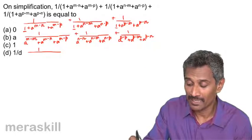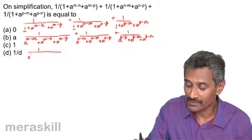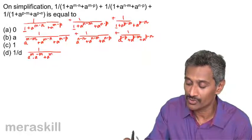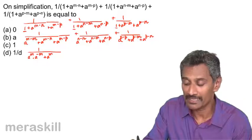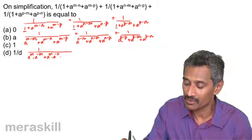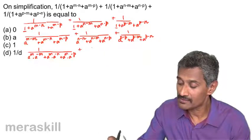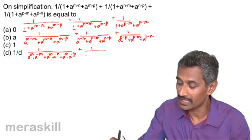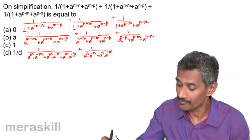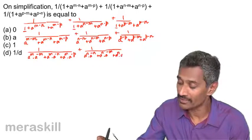Now using the basic laws of indices, a raised to m minus m can be written as a raised to m into a raised to minus m — using the rule that x raised to a plus b is x raised to a into x raised to b. Similarly, a raised to m into a raised to minus p, and then a raised to n into a raised to minus n.